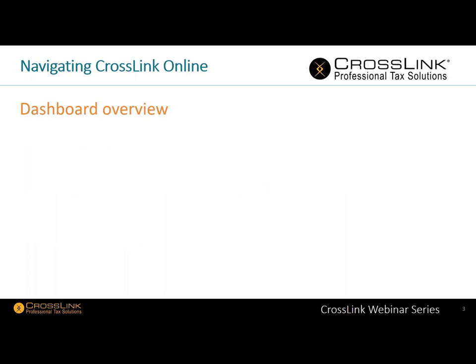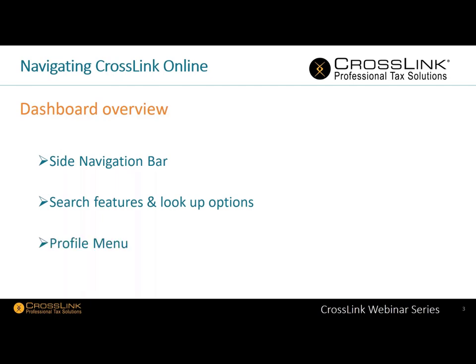Getting started with navigating CrossLink Online, I'm going to cover three main areas vital for preparers: the side navigation bar and its different functions, search features and lookup options for accessing your tax returns, and the profile menu with all the different settings available within that menu.